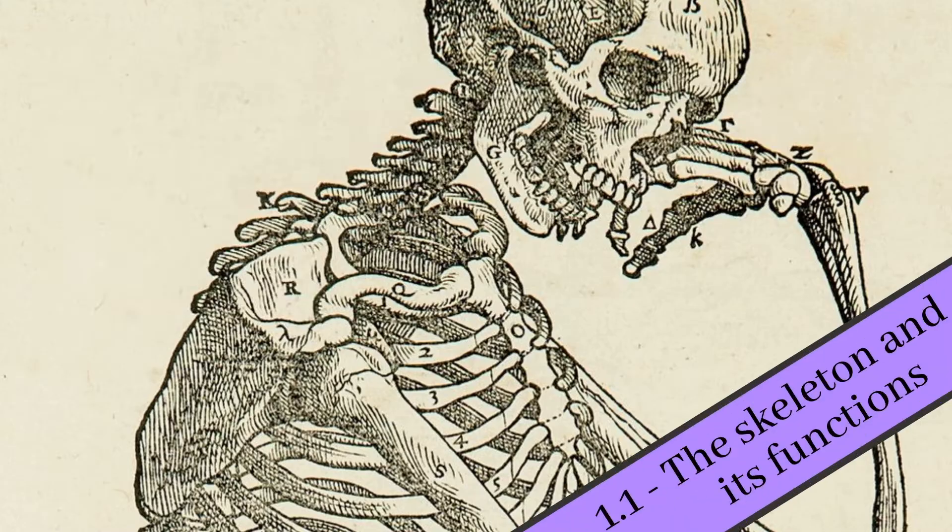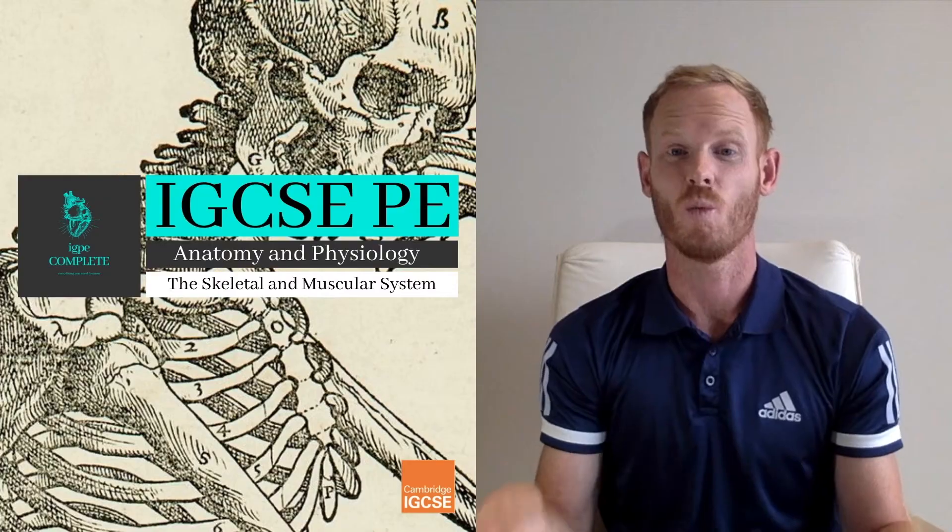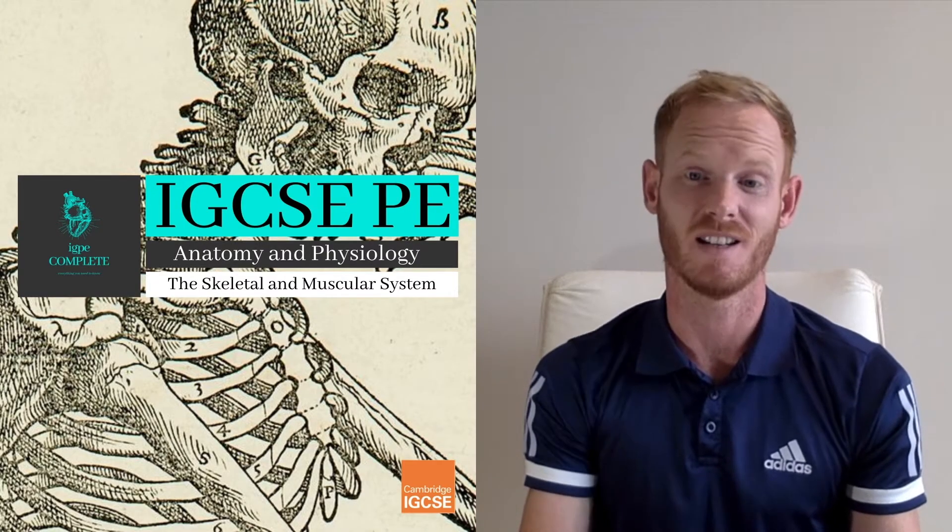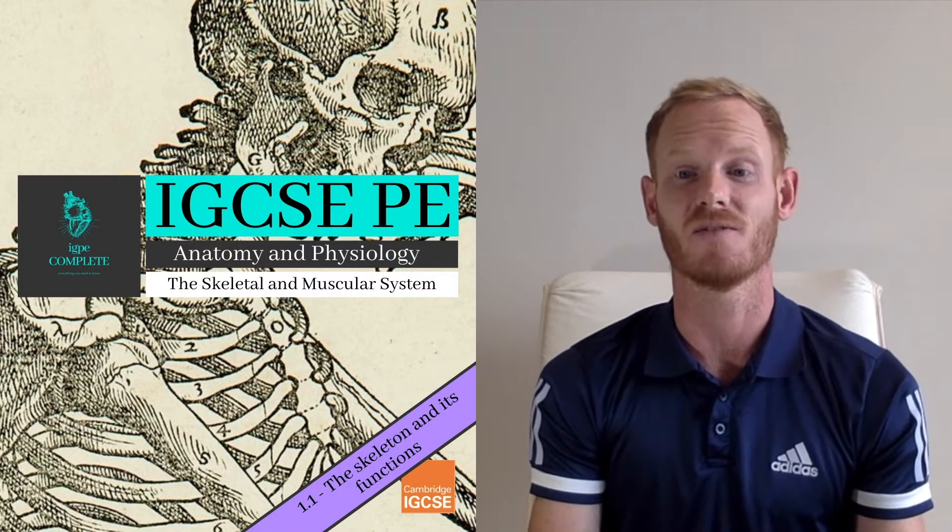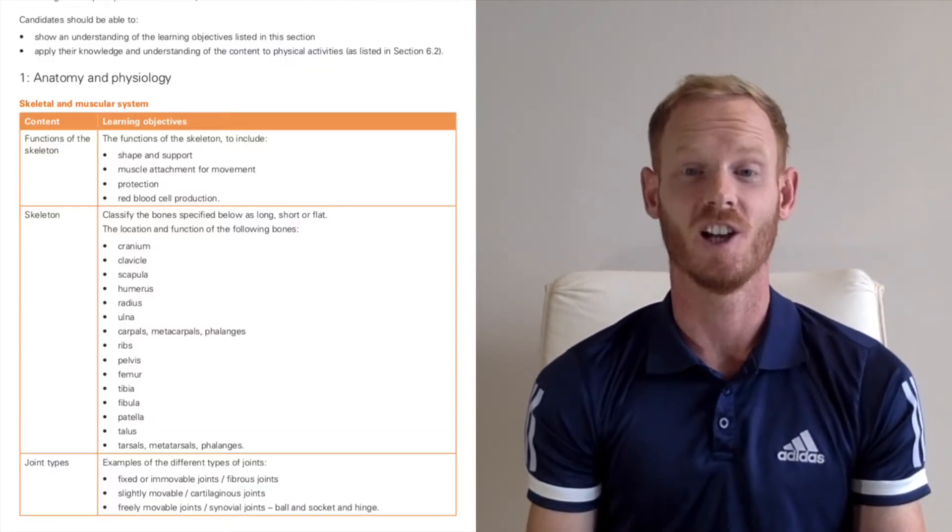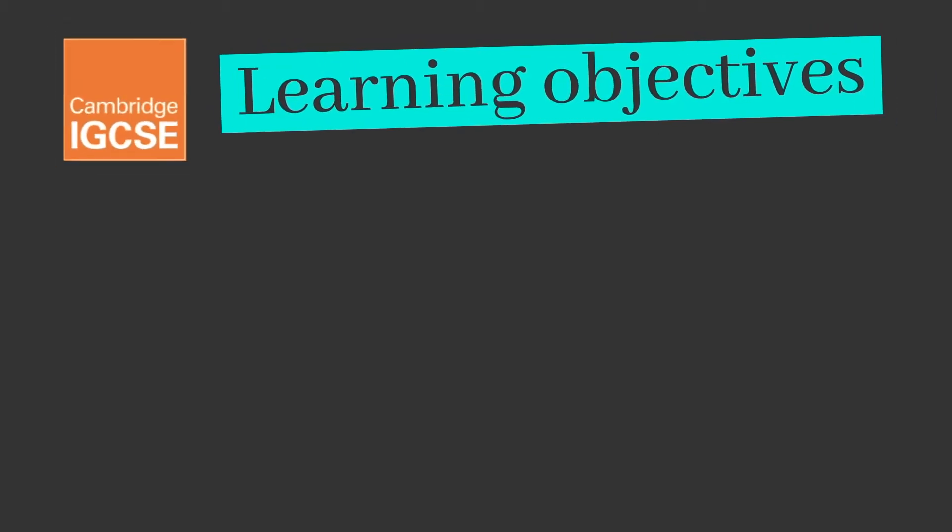Welcome to the very first lesson of the Cambridge IGCSE Physical Education course. We'll begin today with Anatomy and Physiology and the first chapter, the Skeletal and Muscular System. Today's topic is the skeleton and its functions, which you can find at the very start of the contents page in your official Cambridge textbook. As always, we'll be focusing on the learning objectives from the official Cambridge syllabus so that you learn absolutely everything that you need to know for your exam.